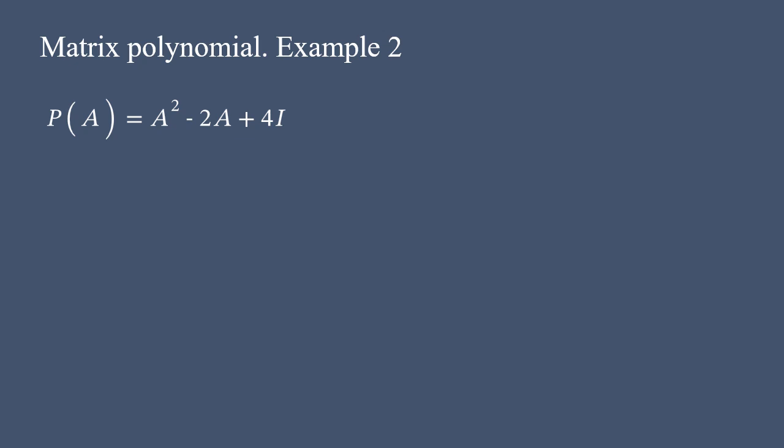It works similarly as in previous example. First, we write the matrix polynomial by plugging the given matrix A. Since the degree of the polynomial is 2, it is enough to determine the A squared.